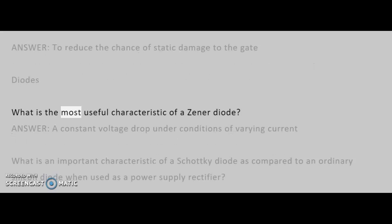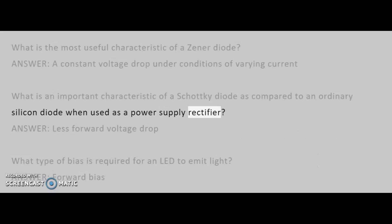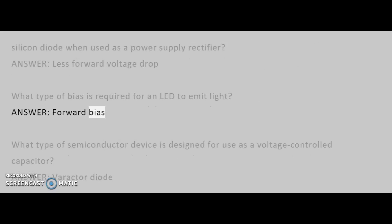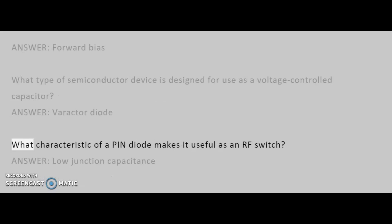Diodes. What is the most useful characteristic of a Zener diode? Answer: a constant voltage drop under conditions of varying current. What is an important characteristic of a Schottky diode as compared to an ordinary silicon diode when used as a power supply rectifier? Answer: less forward voltage drop. What type of bias is required for an LED to emit light? Answer: forward bias. What type of semiconductor device is designed for use as a voltage-controlled capacitor? Answer: varactor diode. What characteristic of a pin diode makes it useful as an RF switch? Answer: low junction capacitance.